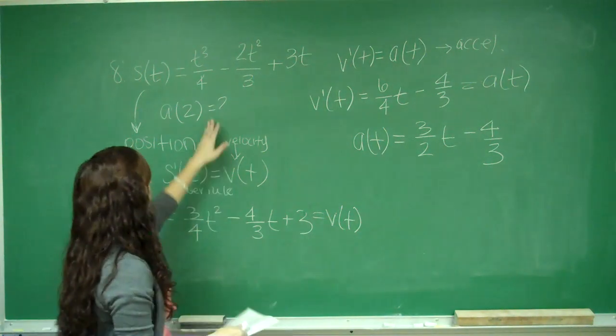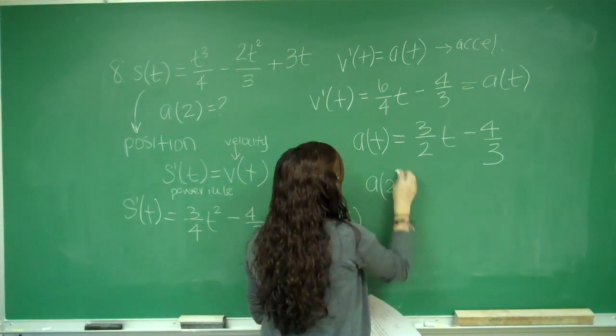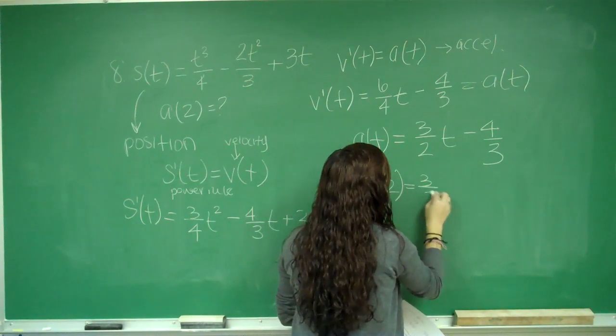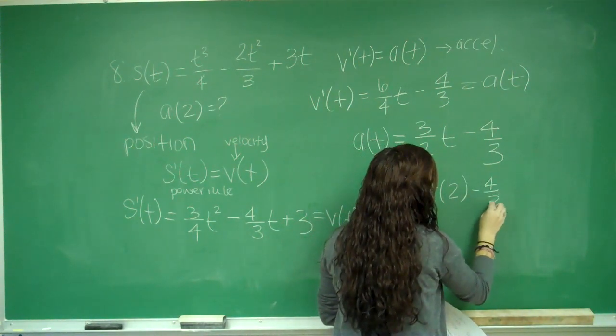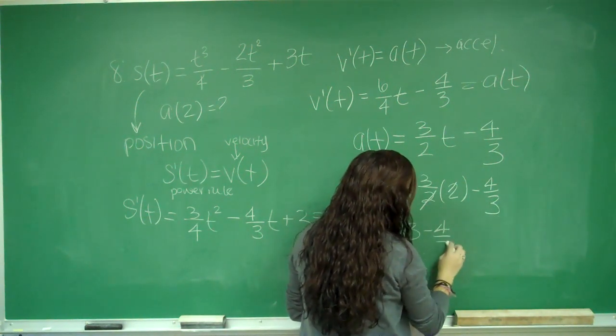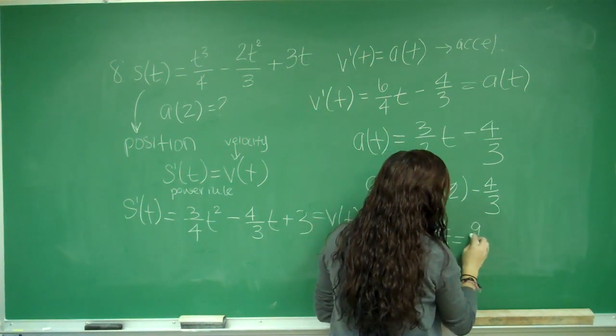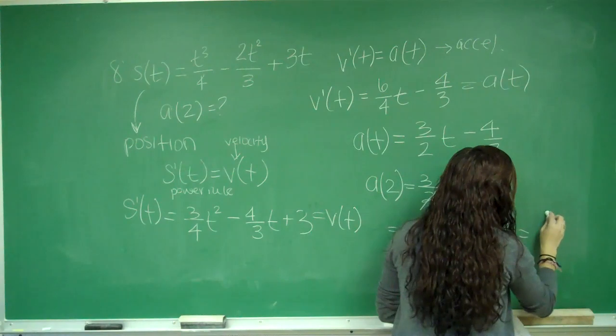The problem asks me after 2 minutes, so I want a of 2. So I do 3 halves times 2 minus 4 thirds. My 2's cancel. I have 3 minus 4 thirds, which is the same as 9 thirds minus 4 thirds. So that's 5 thirds.